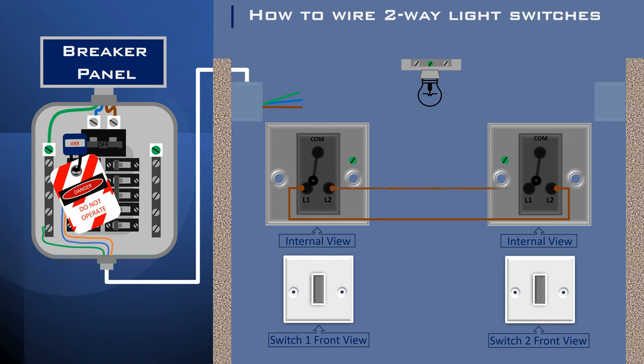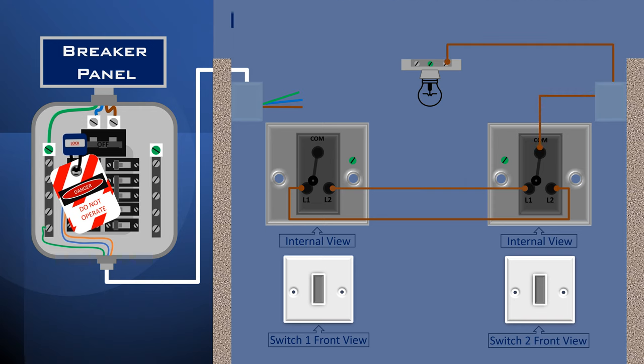At the light fixture location, connect the brown wire from the second switch common terminal to the live terminal of the light fixture. At the first switch location, connect the live brown wire coming from the power supply to the common terminal. Connect the blue wire coming from the same power supply to the neutral terminal of the light fixture.